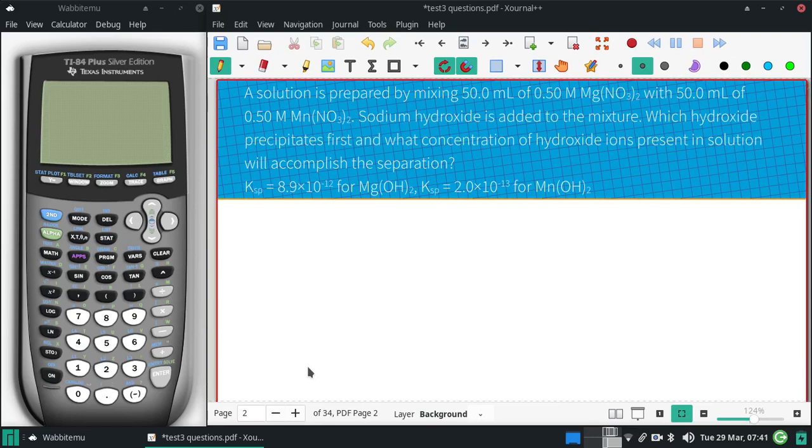A solution is prepared by mixing 50 milliliters of 0.5 molar magnesium nitrate with 50 milliliters of 0.5 molar manganese nitrate. Sodium hydroxide is added to the mixture. Which hydroxide precipitates first, and what concentration of hydroxide ions present in solution will accomplish the separation?